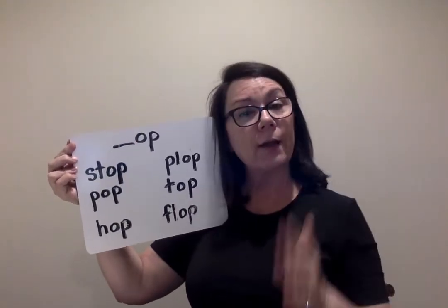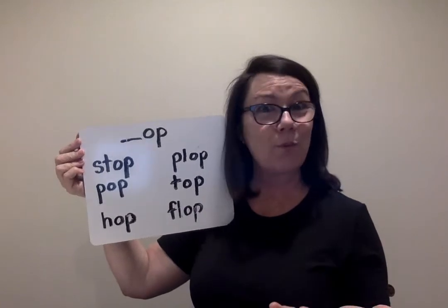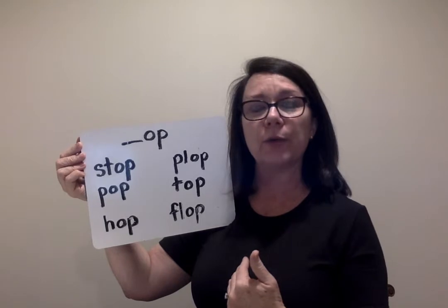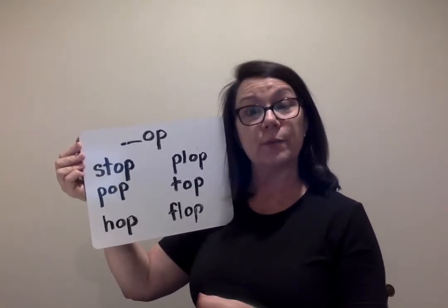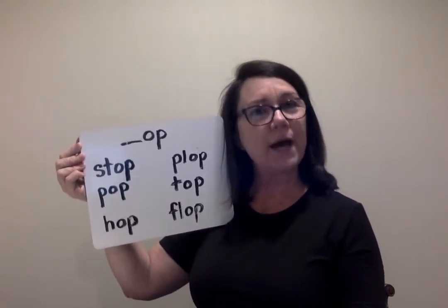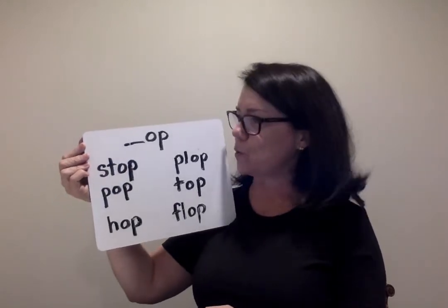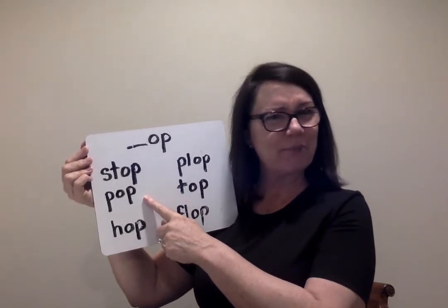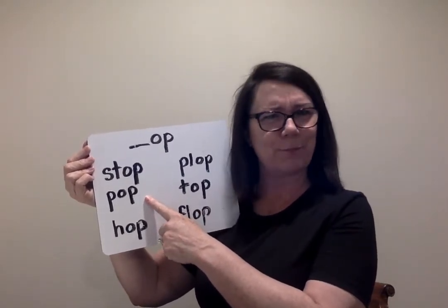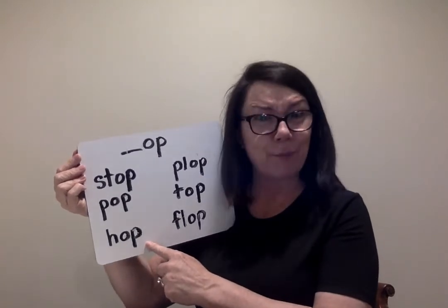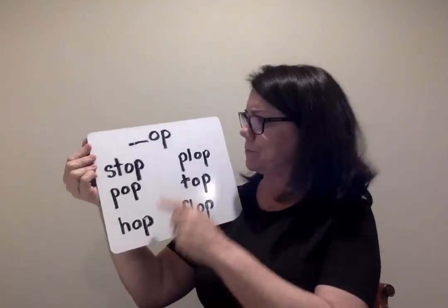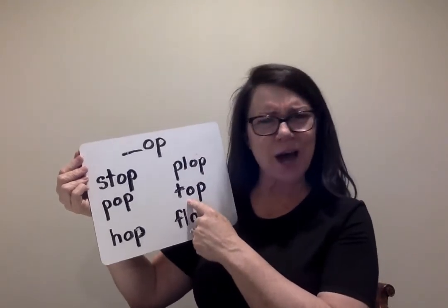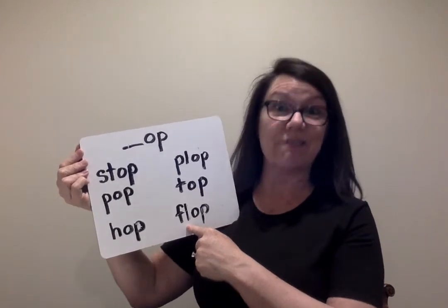Remember that our vocabulary for our story helps inform what might happen in the story. We like to know our vocabulary words prior to reading so we can read them with fluency and get an idea of what might be happening. Something needs to stop. Something might pop — think of all the things that could pop. Someone's going to hop. Somebody's going to flop. Something might be on top and something is going to flop.